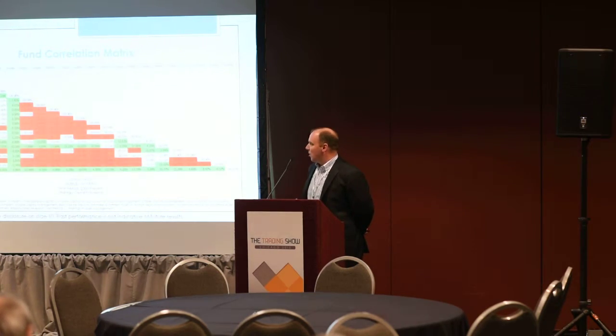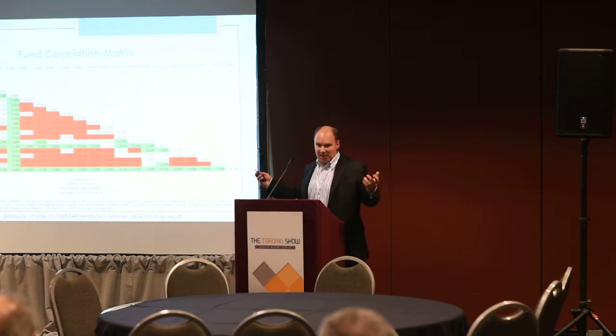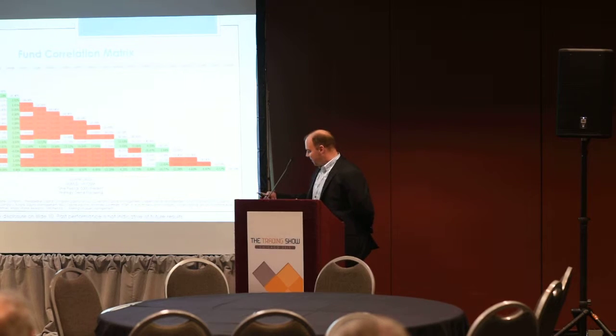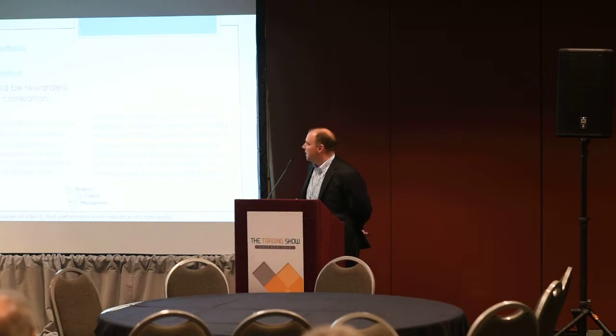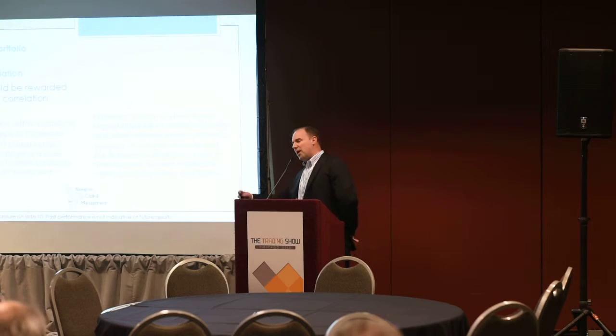What you see is that all the red boxes are two CTAs that are highly correlated to each other. The basic conclusion is that if we pick a category of managers with 30 to 100 managers within it, most of them are highly correlated to each other. So strategies should be rewarded for their lack of correlation. Adjusting the Sharpe through a number of different metrics for the correlation to the blend you're trying to gain exposure to is actually a far more effective way to utilize those metrics.